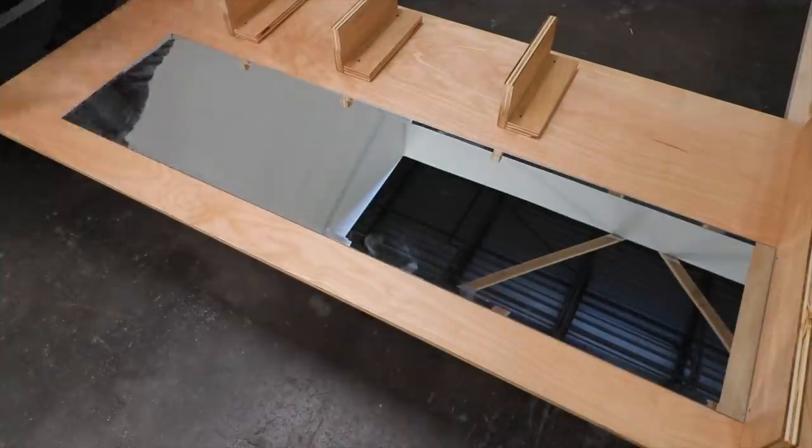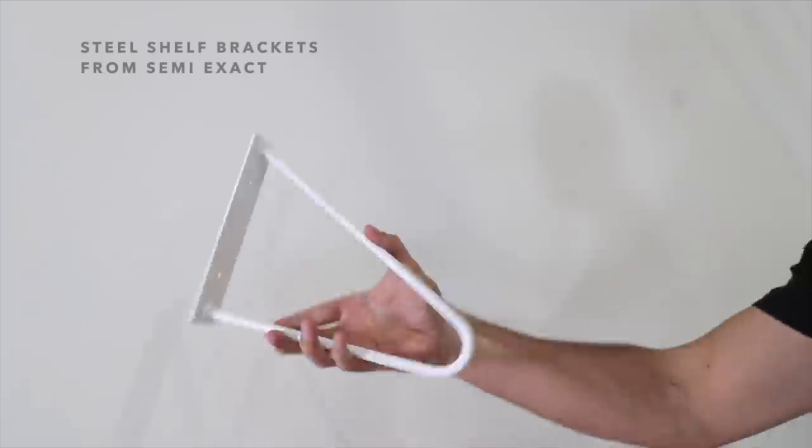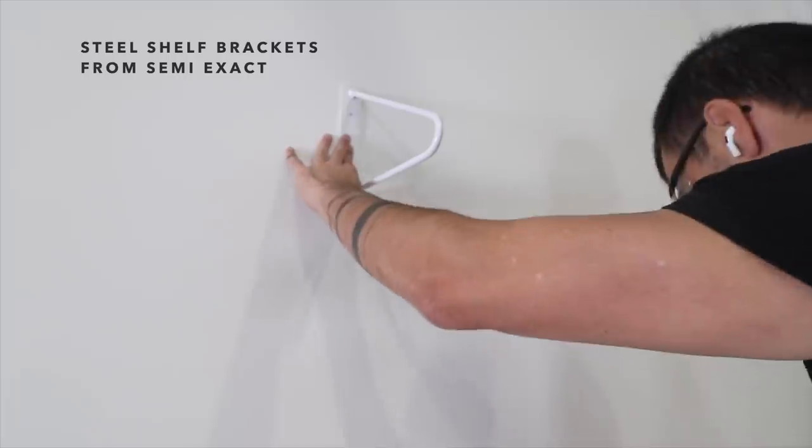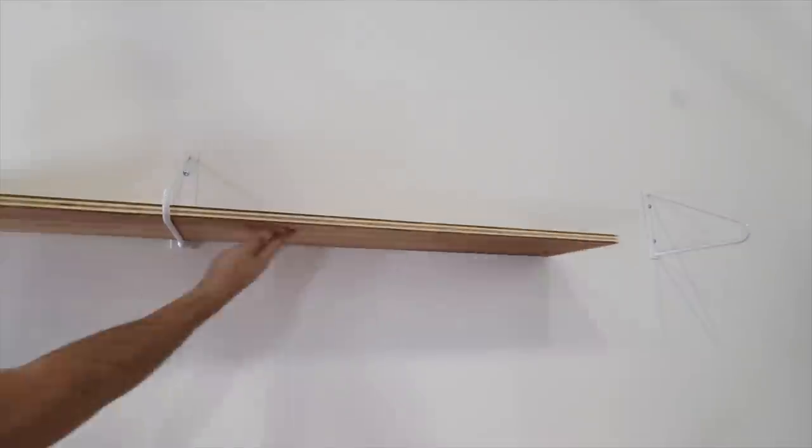I then used the hardware that came with the mirror to attach it to the plywood. I had some leftover scrap plywood, so I just used some semi-exact shelf brackets and made a shelf that will go over the desk.